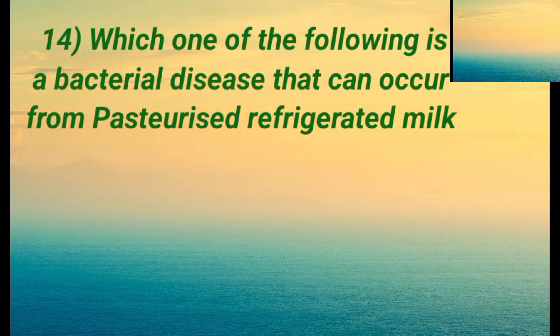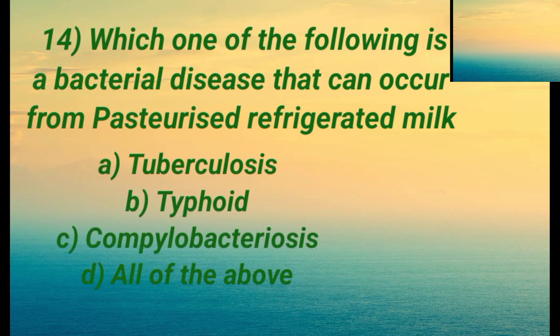Question fourteen: which one of the following is a bacterial disease that can occur from pasteurized refrigerated milk? Option A is tuberculosis. Option B is typhoid. Option C is campylobacteriosis. Option D is all of the above. The right answer is D: all of the above.